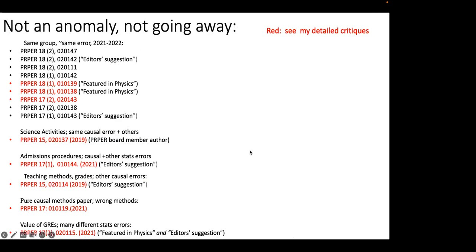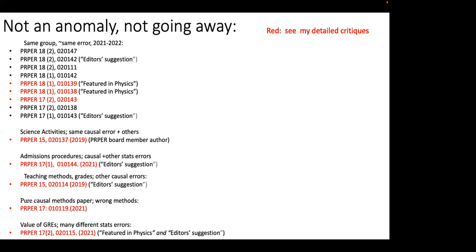Am I picking out just one anomalous paper? I don't think so. Just from the same group, looking at 2021 and 2022, confining ourselves to PRPER, here are eight more papers all making essentially the same error: taking prior assumptions, translating them to a theoretical framework, expressing that as a DAG, and then using the data just to decorate the DAG with coefficients — acting as if the data had told them what DAG to use. Notice that four of these papers were either picked out by the editors as suggestions or chosen for the APS physics.org magazine to be featured. These are not obscure — they seem to be favorites of the editor.